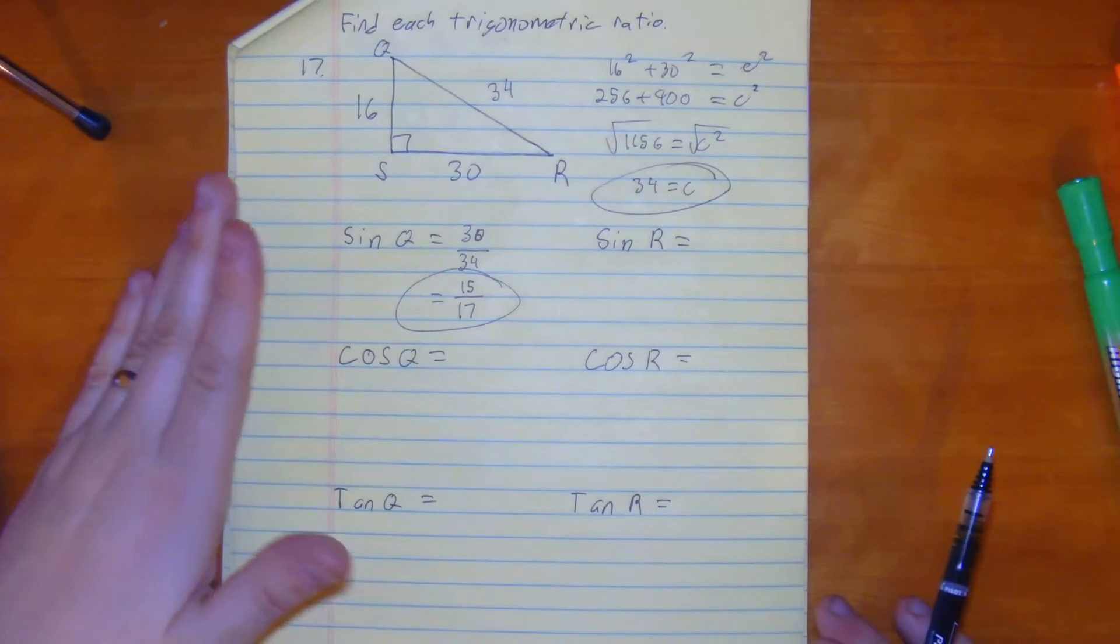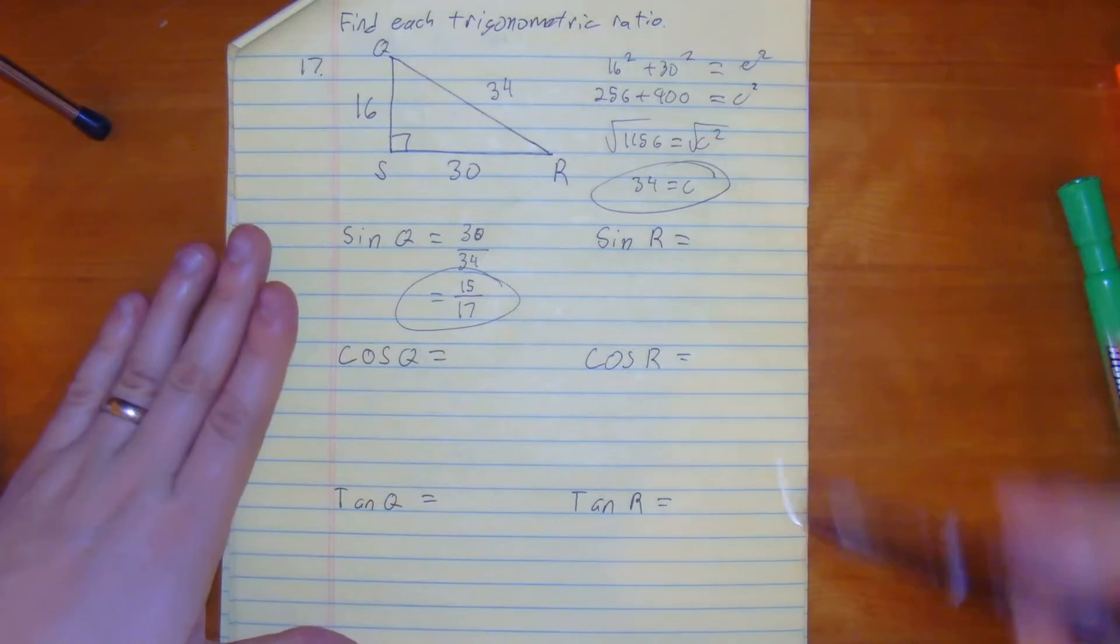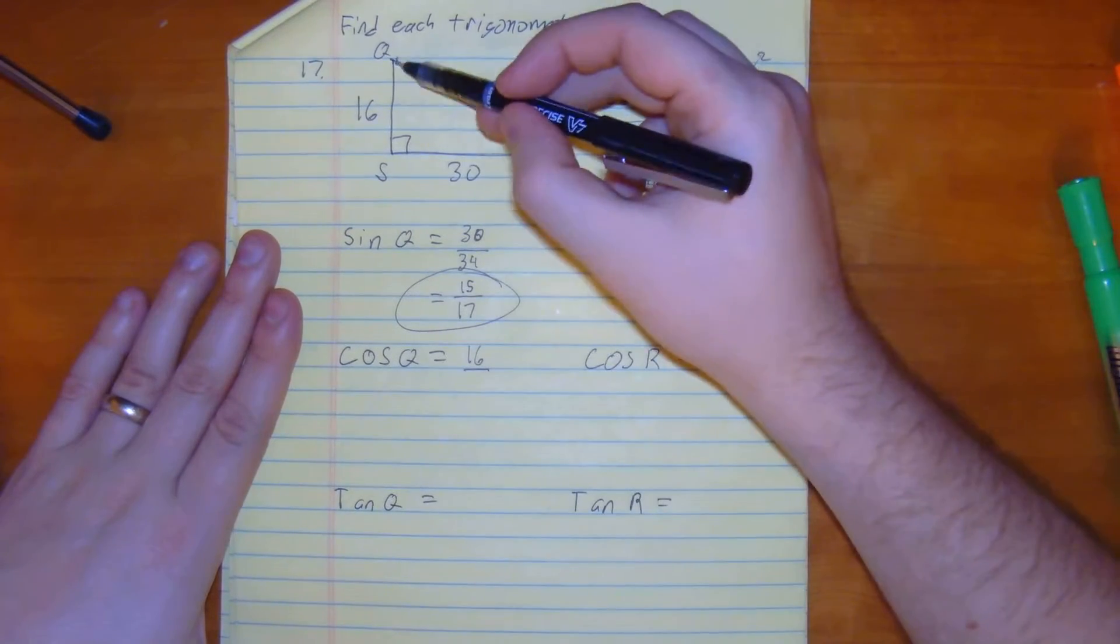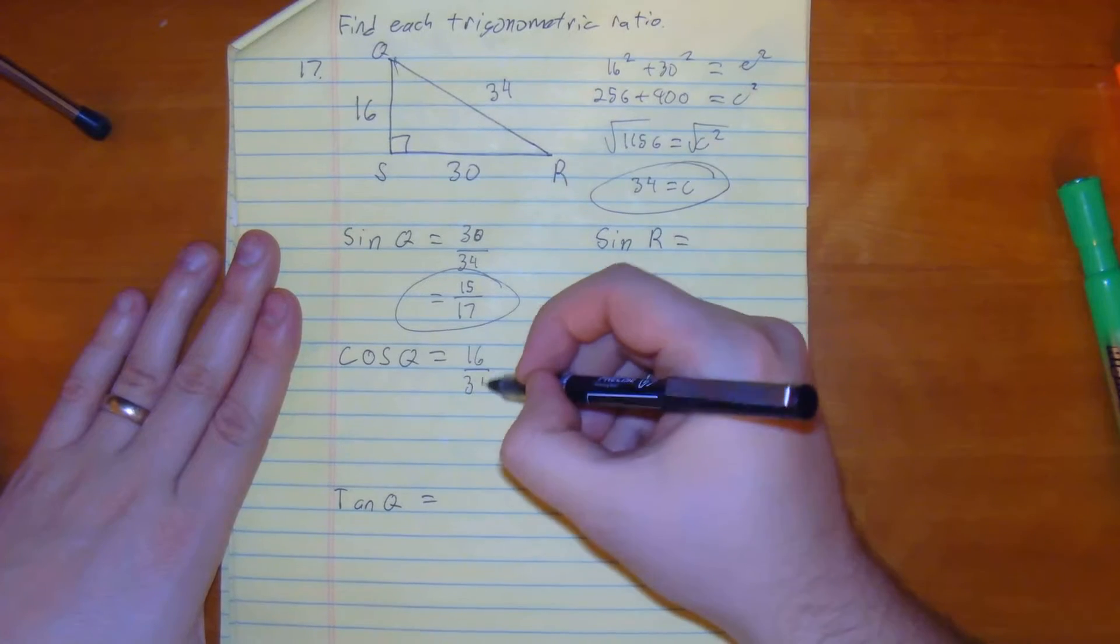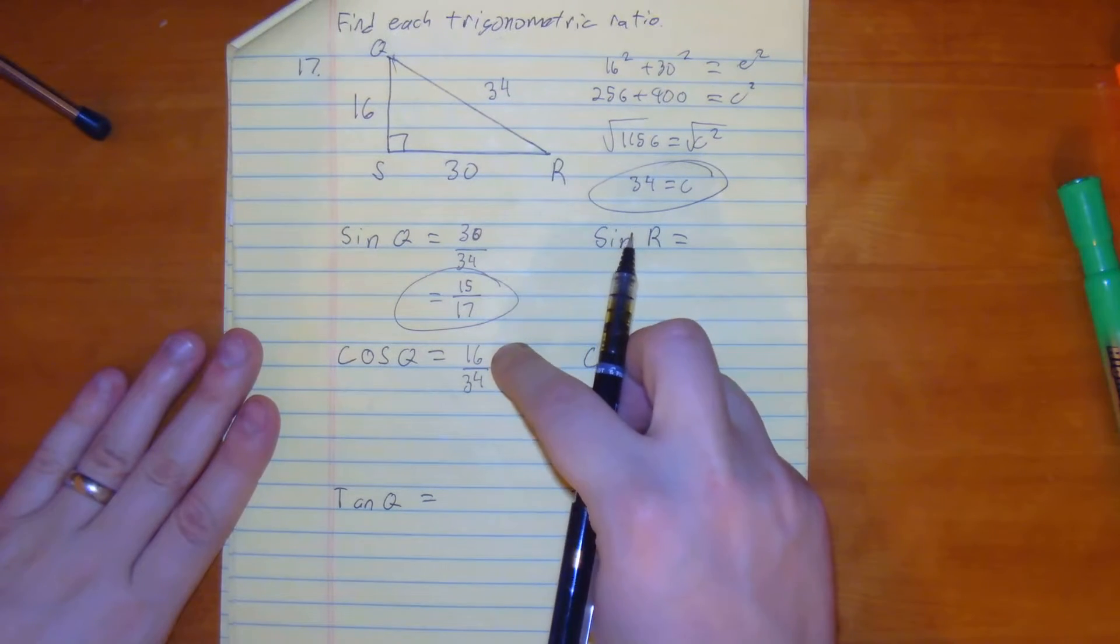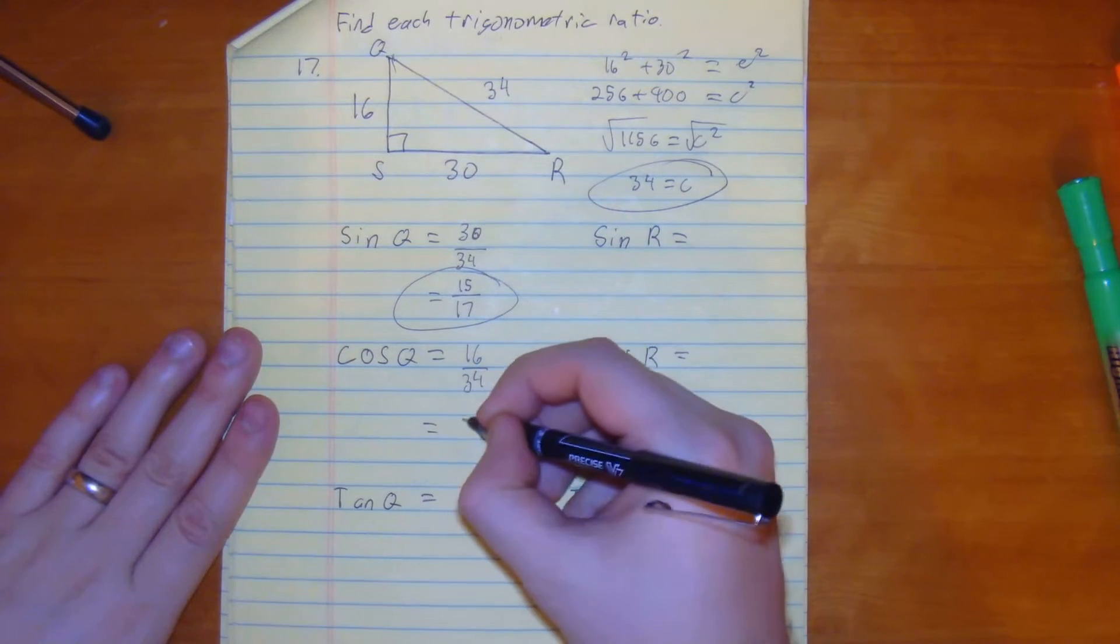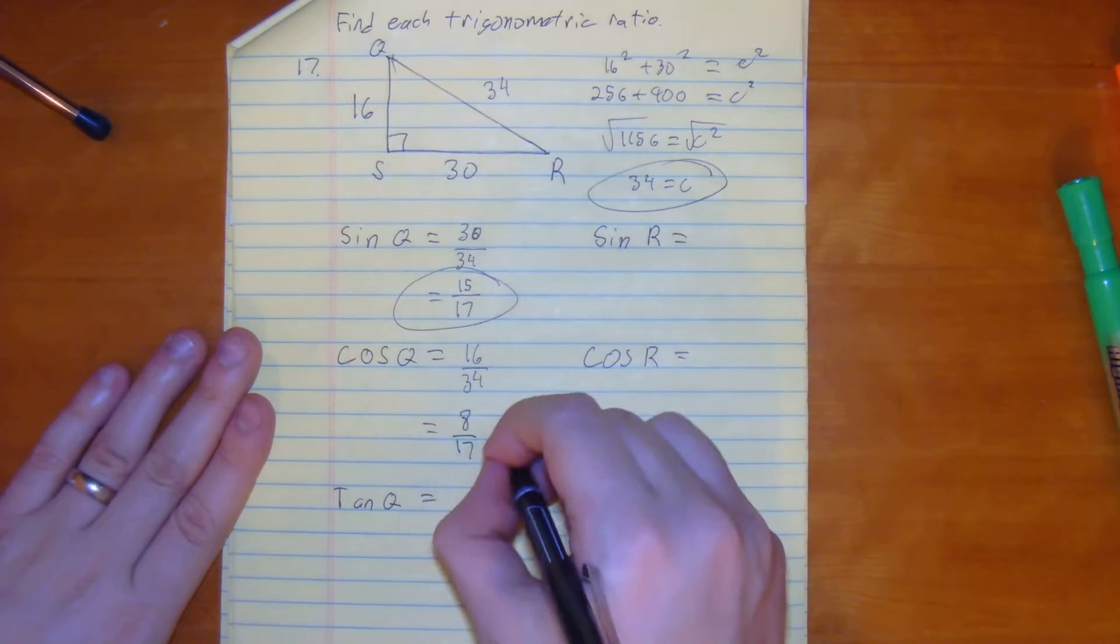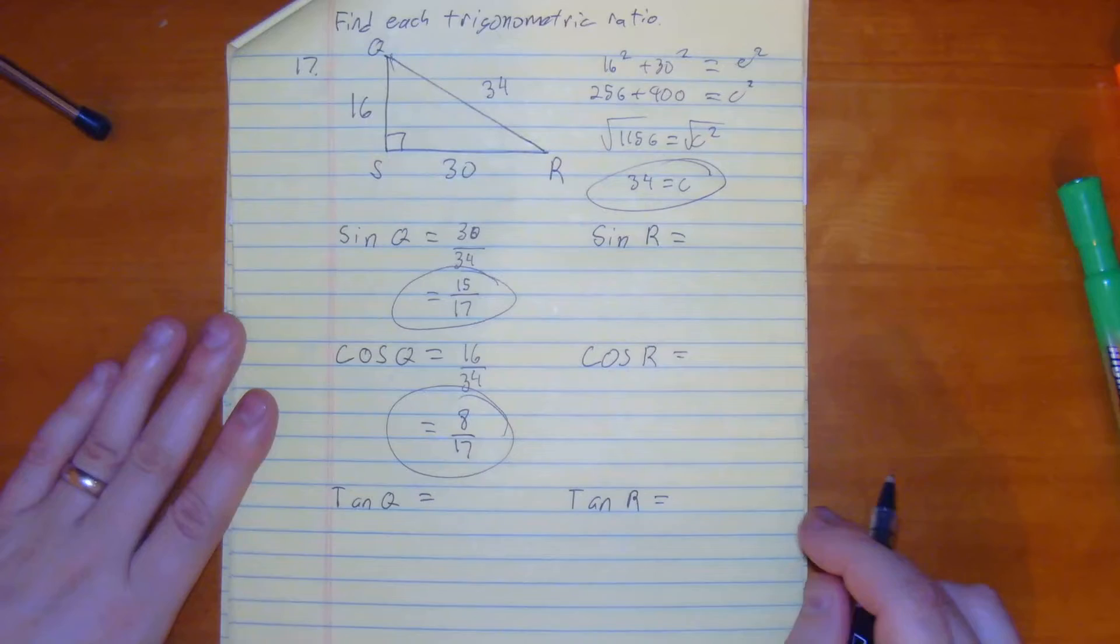Now, let's take a look at our cosine of q. So q would be 16 over, because our adjacent side, over 34. So what we have here is we can simplify it by dividing by 2 again. We get 8 over 17. We can't simplify it any further, so our cosine of q is 8 over 17.